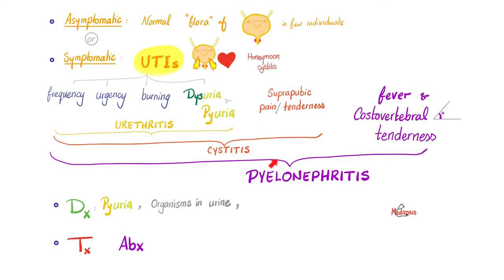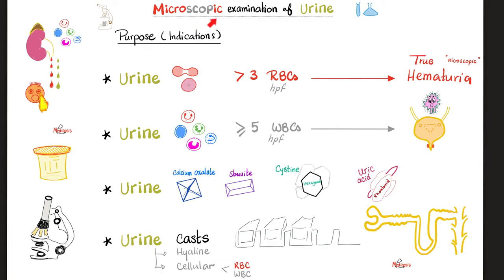How can we diagnose urinary tract infections? First, signs and symptoms, then go to the lab. Look for pus in the urine, look for white blood cells, look for leukocyte esterase and nitrites in the urine. Look for the actual organism by urine culture. Treatment is antibiotics.